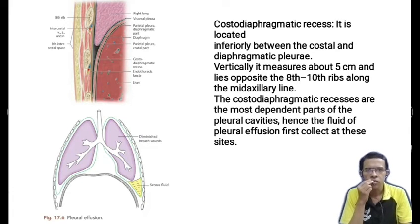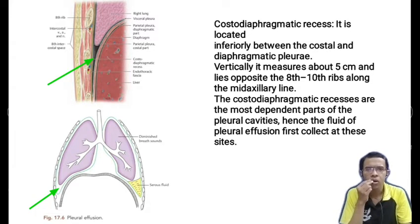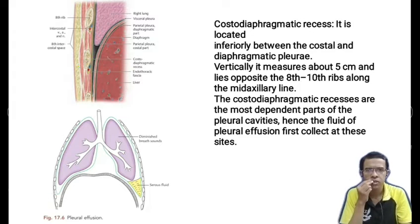The costodiaphragmatic recess is located inferiorly between the costal and diaphragmatic pleura. Vertically it measures about 5 cm and lies opposite the 8th to 10th ribs along the midaxillary line. The costodiaphragmatic recesses are the most dependent parts of the pleural cavities; hence, the fluid of pleural effusion first collects at these sites.